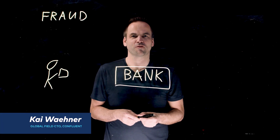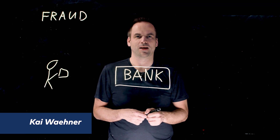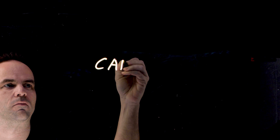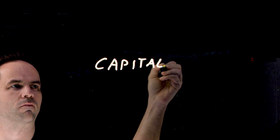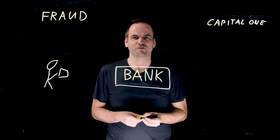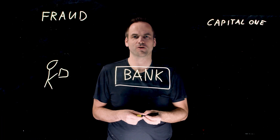This is Kai Wehner with Confluent. One real world example for fraud detection with data streaming is Capital One. Capital One saves around $150 per customer per year on average — massive volumes of money they can save.